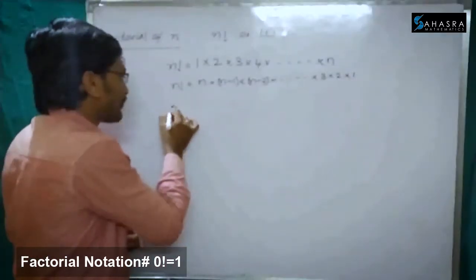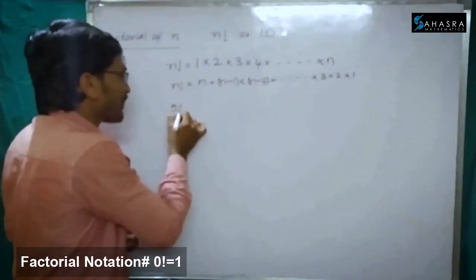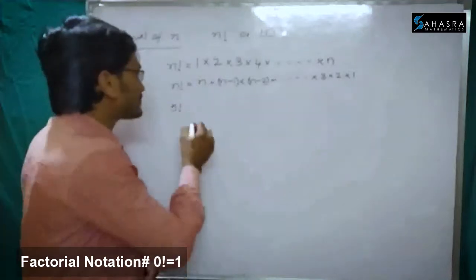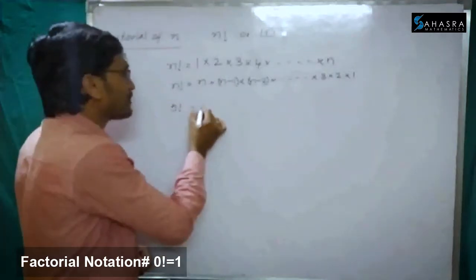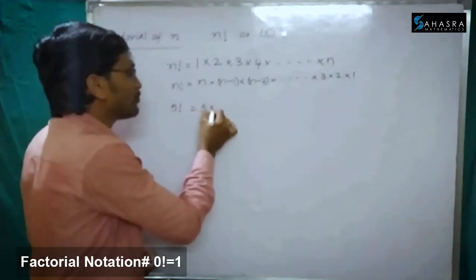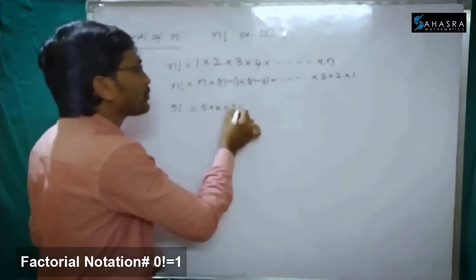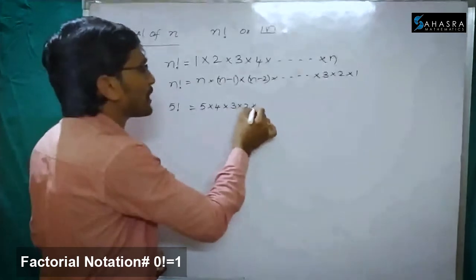So if we want to find 5 factorial, how can we write? Simply we can write 5 into 4 into 3 into 2 into 1.